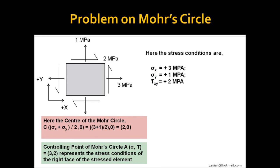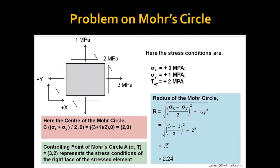Most importantly, the control point A represents the stress condition of the right phase of stressed element. The coordinates of A are 3, 2. By applying formula, we determine the radius of Mohr's circle and we get the radius 2.24.